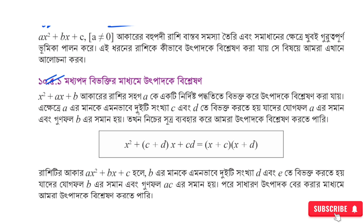For example, we have x squared plus ax plus b equal to the root, where we have 2.021 equal to the root. In this case, A is equal to the root. The root is equal to the root.